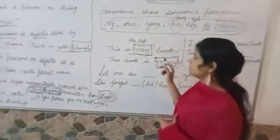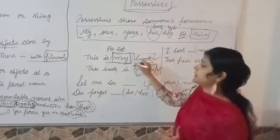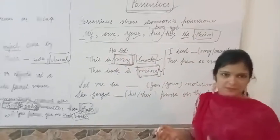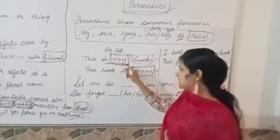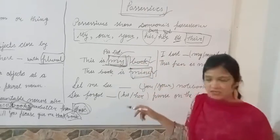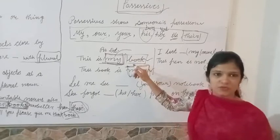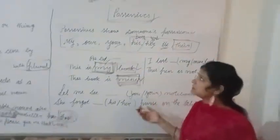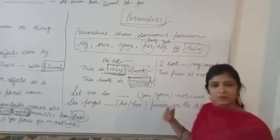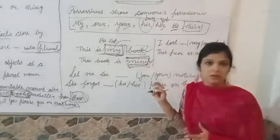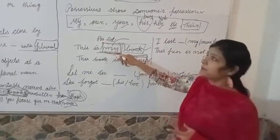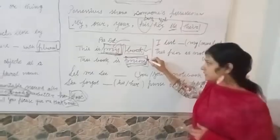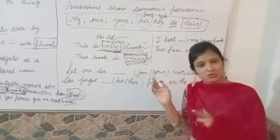We always think that the demonstrative is always used before a noun. 'This is your competitive exam' — here 'this' is a demonstrative pronoun, not a determiner. Determiners are always followed by a noun. So if we see 'my book,' 'my' is the possessive determiner. But if we say 'this is mine,' 'mine' is a pronoun. How do we tell if it is a determiner or a pronoun?